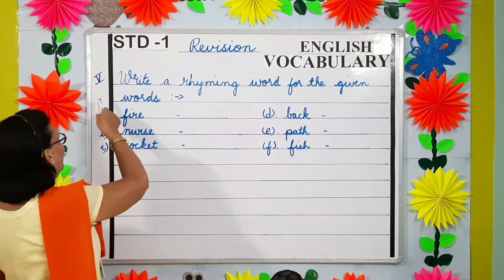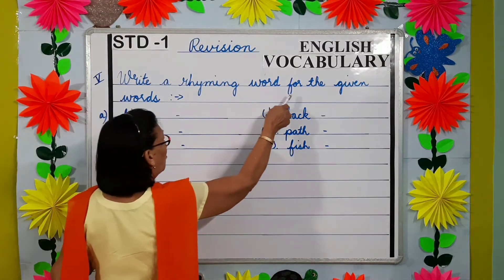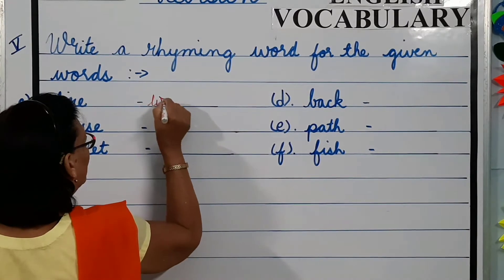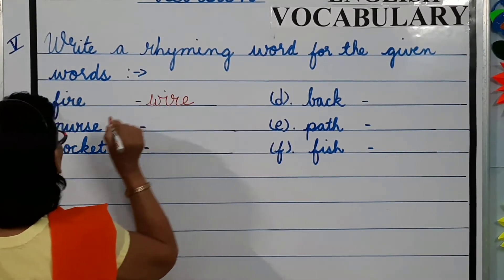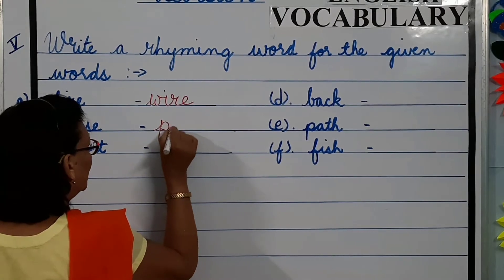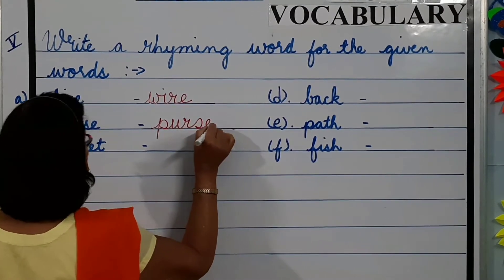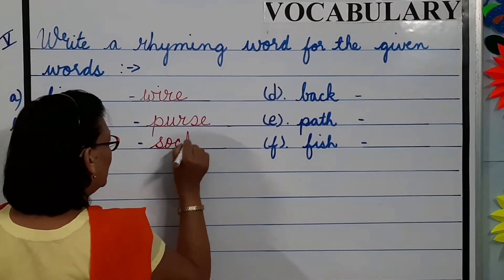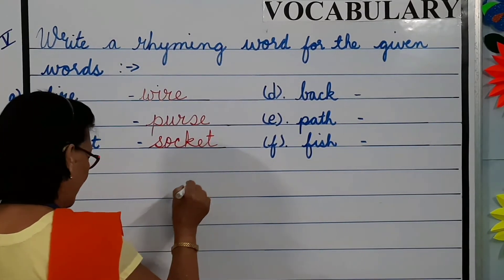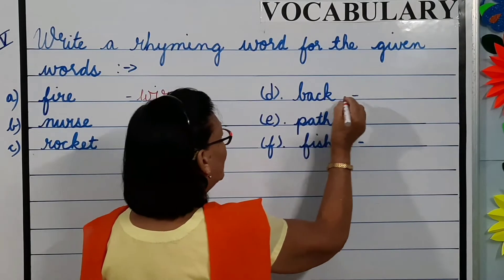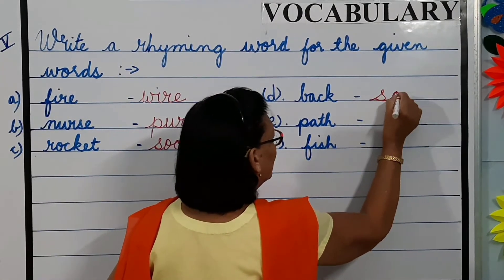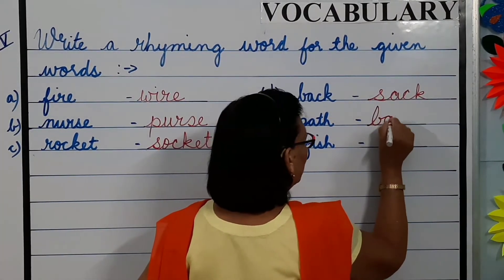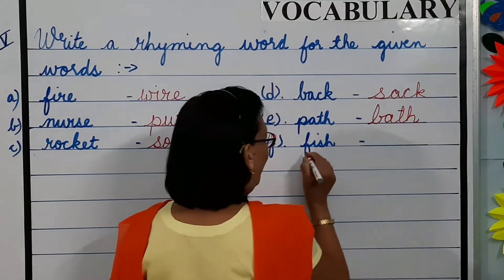Question number 5: write a rhyming word for the given words. Fire — wire. Nurse — purse. Rocket — socket. Back — sack. Path — bath. Fish — dish.